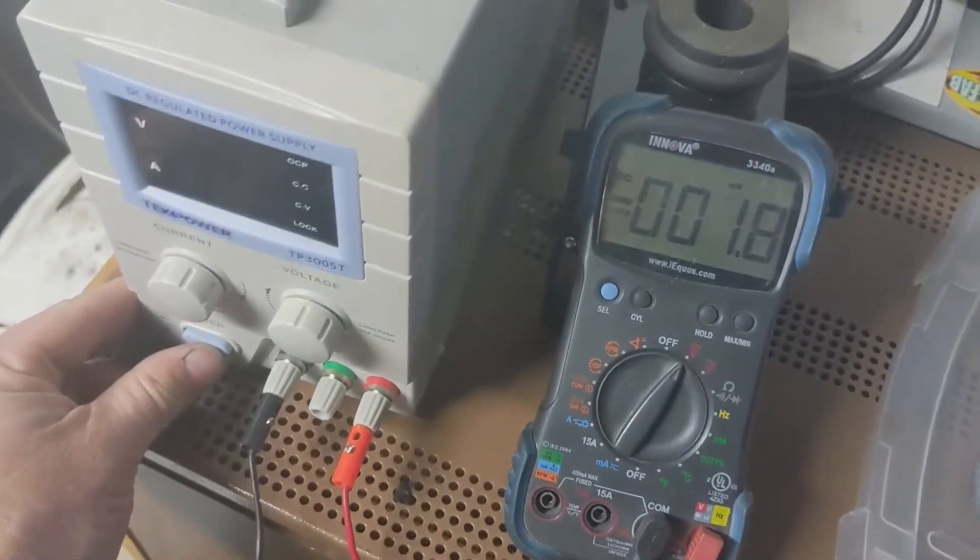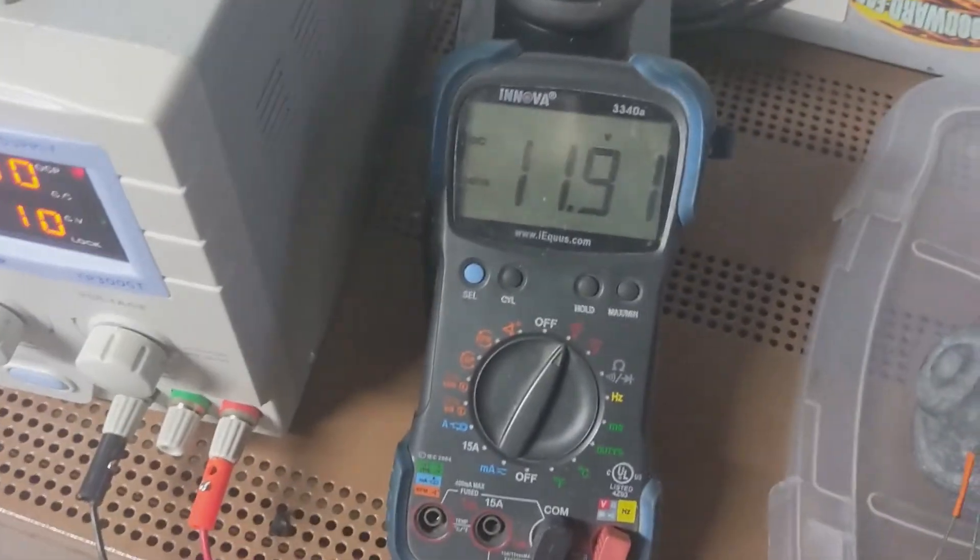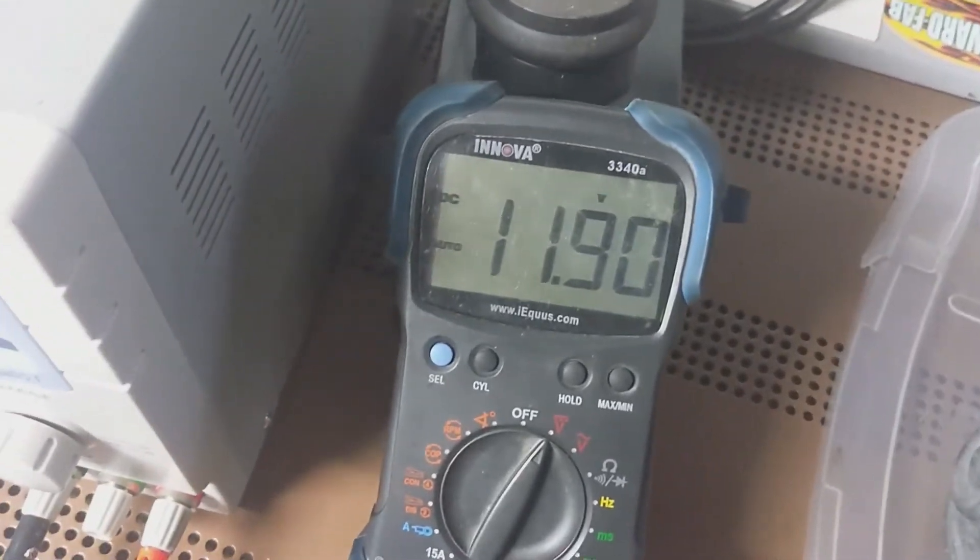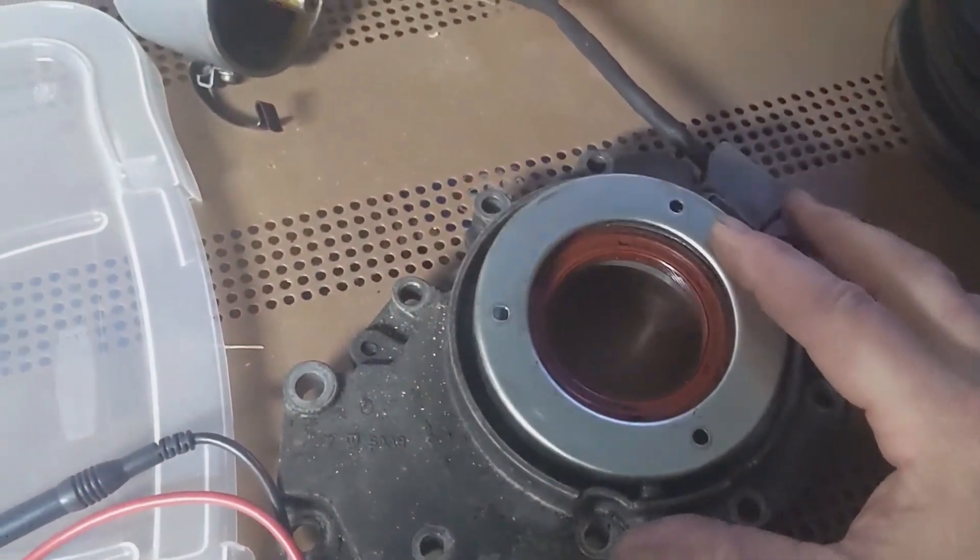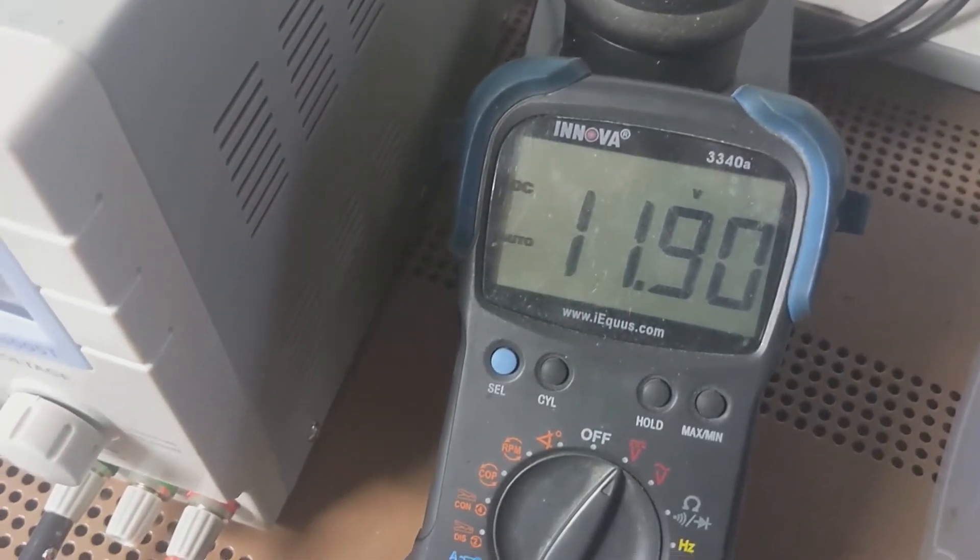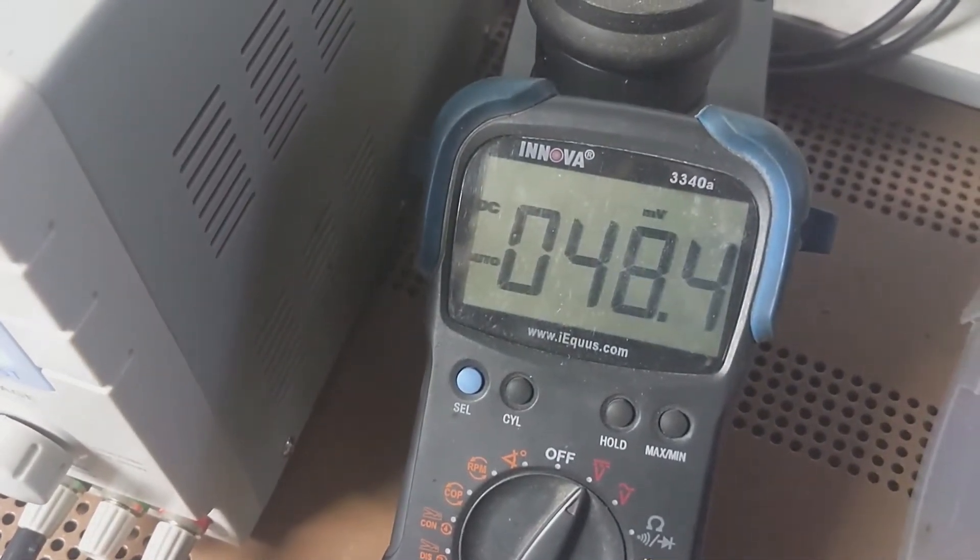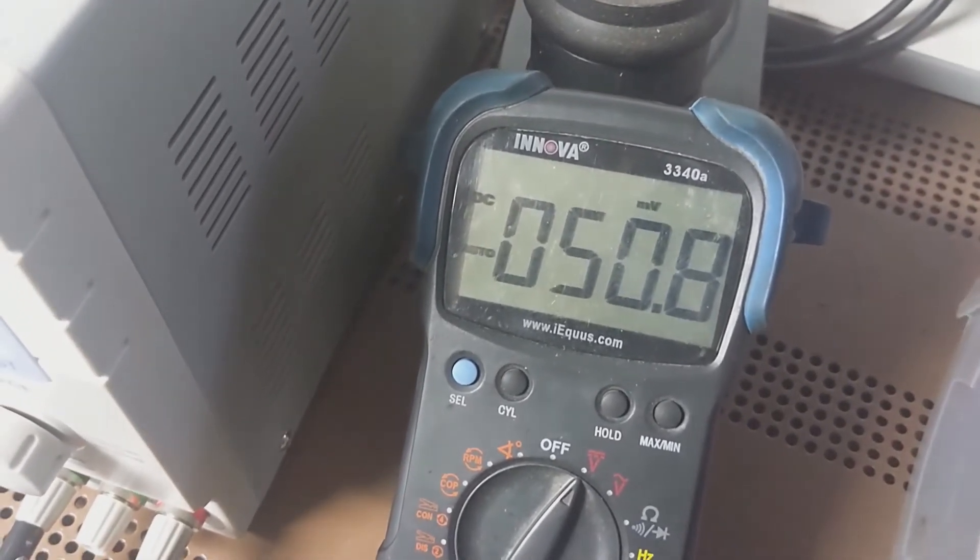And very similarly, I'm going to fire up my regulated power supply. And what I can see, I had positioned the aperture disk over here blocking the Hall sensor. So I have high voltage. And if I remove it, simulating the open area, I get low voltage. So this works exactly the same as the distributor-mounted Hall sensor.